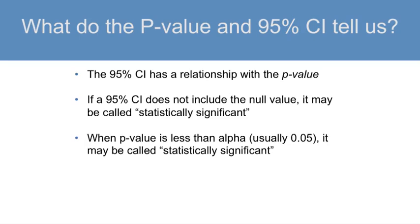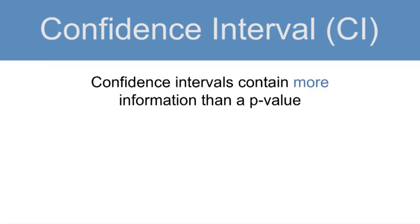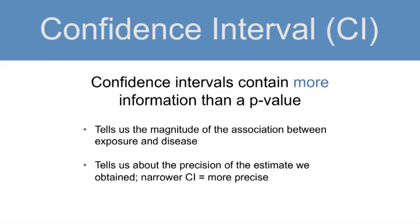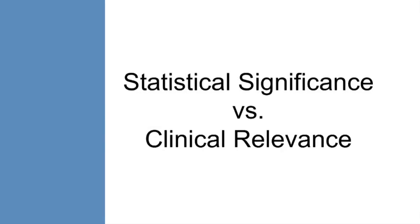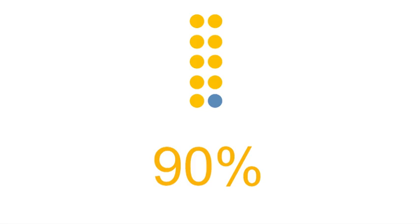If the 95% confidence interval does not include the null value, it is called statistically significant. When a p-value is less than alpha — which is usually chosen as 0.05 — it may be called statistically significant. When you have a statistically significant result, it means you can reject the null hypothesis that there is no association between the exposure and the health outcome. Confidence intervals contain more information than a p-value: they tell us the magnitude of the association and the precision of the estimate. The narrower the confidence interval, the more precise the estimate. A clear distinction must be made between statistical significance and clinical relevance — the same result may be statistically significant with a large sample size but not significant with a smaller one.